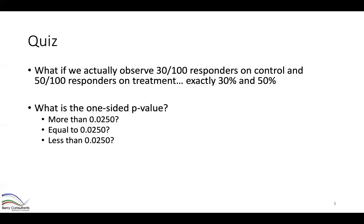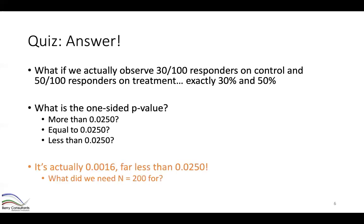It turns out that if we observe this exact data, our p-value is actually far less than two-and-a-half percent — it's 0.0016. So if that's the case, why did we need a sample size of 200 subjects? Couldn't we have gotten by with something less than that?